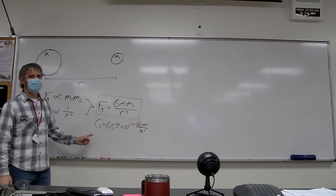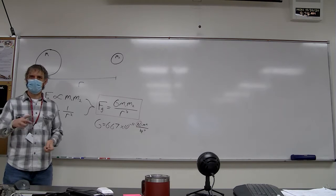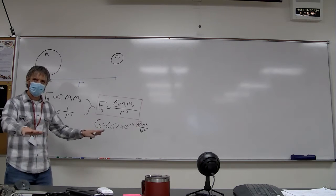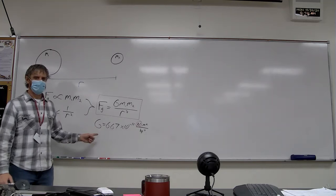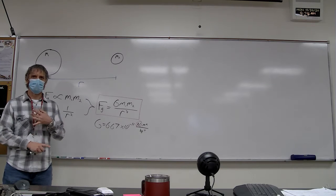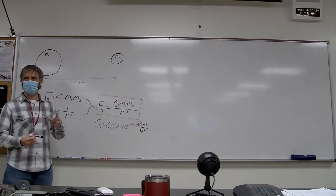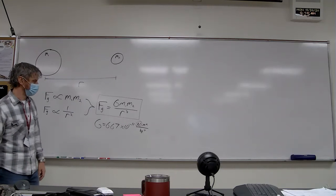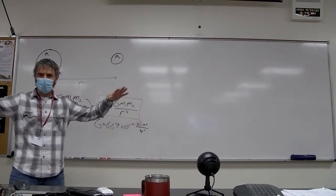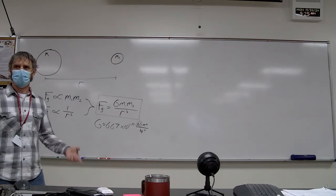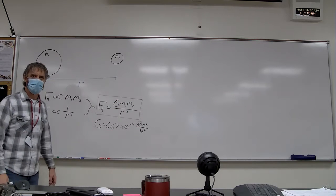Pound for pound, the electromagnetic force — which dominates most of our everyday lives with the exception of being stuck to the Earth — is a billion billion billion million times stronger than the gravitational force. Gravitational force is by far the weakest of the fundamental forces in the universe. That's why it requires something very large like the Earth to actually exert forces that we can measure.